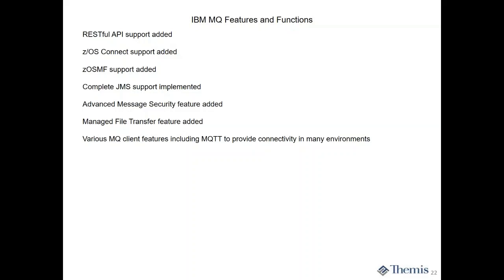MQ messages can contain anything — it doesn't have to be text. It could be images, sound bites, video clips — whatever your little heart desires. There are hardware devices that can basically send an MQ message client into a server somewhere and say you need to order milk — welcome to the internet of things. Your refrigerator has cameras, it's internet-enabled. That happened through MQTT — MQ Telemetry Transport.